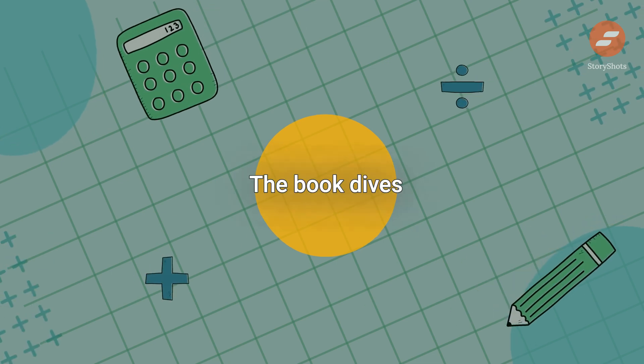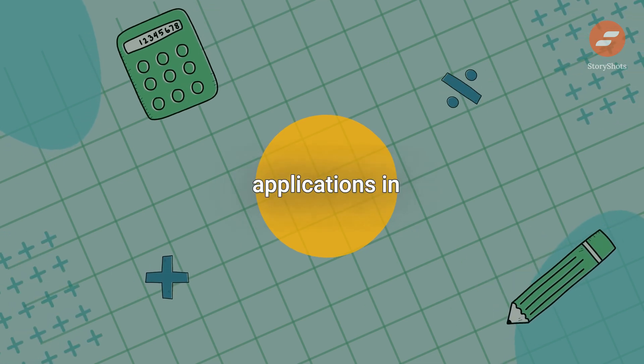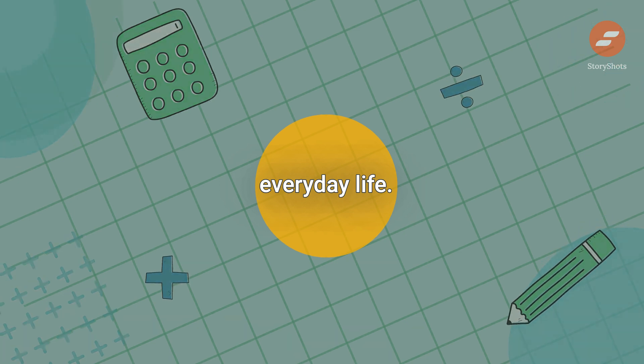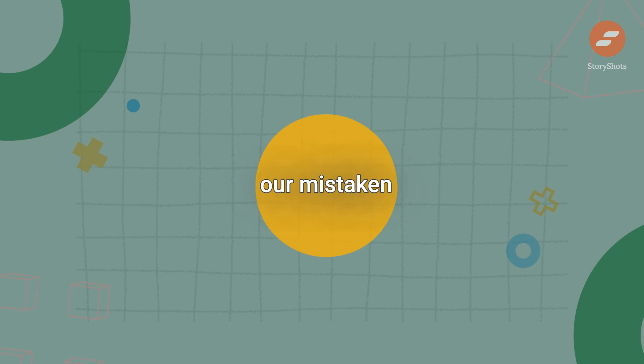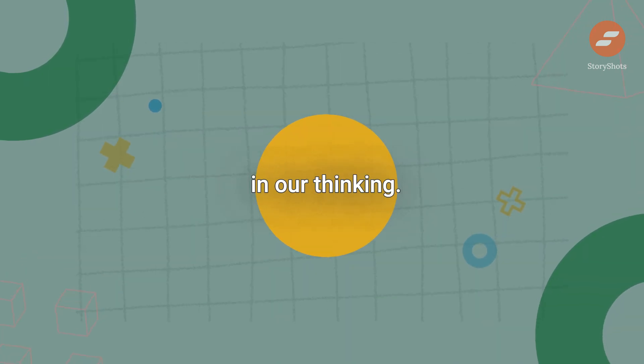The book dives into the world of mathematics and explores its applications in everyday life. By looking at simple and complex decisions, Ellenberg reveals our mistaken beliefs that lead to common errors in our thinking.